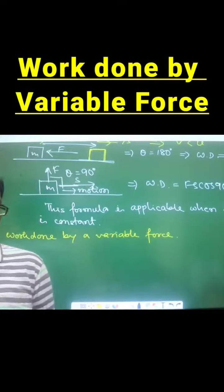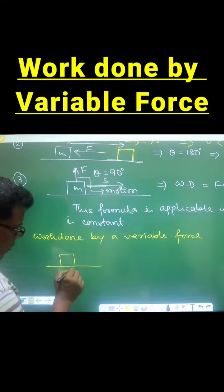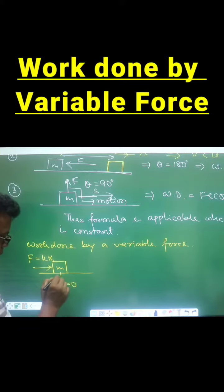How to calculate work done by a variable force. This is a block of mass m, it is pushed by a force F. Let that force equal kx, position x equals zero from where the body